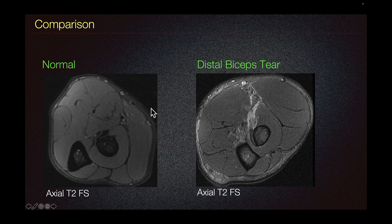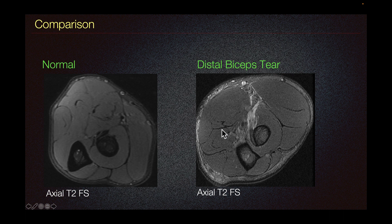This is a comparison showing a normal biceps tendon inserting at the radial tuberosity — we can see this hypointense band, which is normal. This is the case we just saw, showing edema signal without the hypointense band at the expected location of the radial tuberosity.